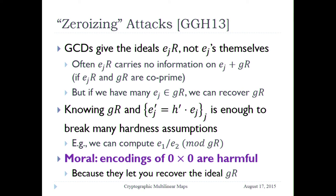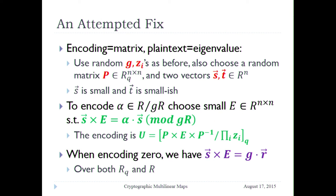Now that you know what the plaintext space is, you can go back to your e_j' values — which are a system secret times e_j — and try to break many assumptions. For example, if you wanted to test something like DDH, that translates to knowing whether the e_j's had one particular ratio, and that you can do even if they're multiplied by some constant, because now you know you need to reduce mod g. The moral of this attack: encodings of zero are harmful, because giving out the ideal g_R — essentially revealing the plaintext space — is bad for this particular encoding scheme.